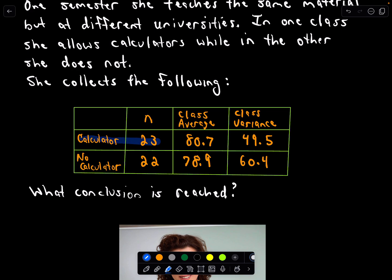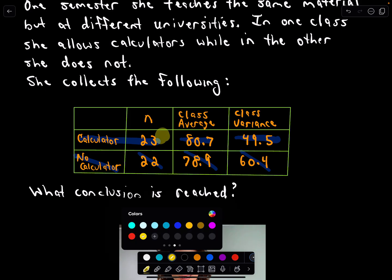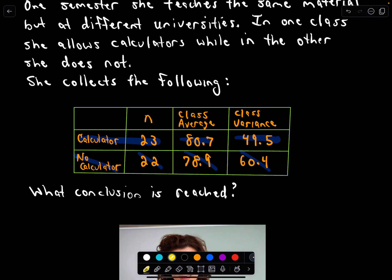In the calculator class she has 23 students. The average is 80.7 and she calculates that class variance as 49.5. And then we have the no calculator class. Well there were 22 of them. The average is 78.9 and the variance is 60.4. And again just to remind you, notice that these values, this would be my n1 value, my n2 value, this is going to be my average for the first one, my average for the second one, and then the class variance, that's going to be my sample standard deviations squared.